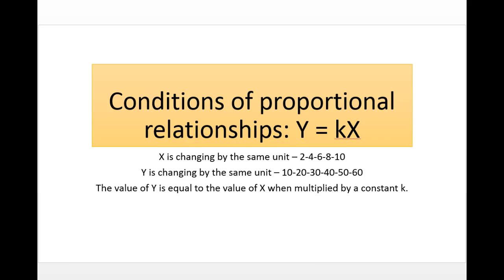The conditions of a proportional relationship: y is equal to k times x, where k is a constant. x is changing by the same unit — such as 2, 4, 6, 8, 10 — and y is changing by the same unit — such as 10, 20, 30, 40, 60. The value of y is equal to the value of x multiplied by the constant k.